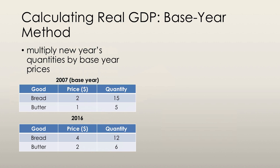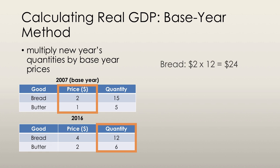Let's learn how to calculate real GDP using the base year method. All we need to do is multiply the new year's quantities by the base year prices. So 2007 is currently our base year — let's take the prices and quantities of these two goods and the prices and quantities of the current year, which is 2016, and see what our real GDP is. When we look at bread, we have $2 per pack of bread, and we're going to multiply that by 12 packs of bread bought in 2016.